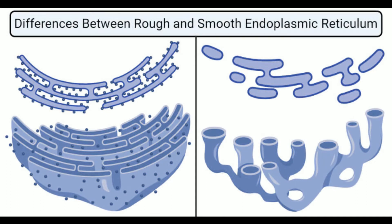The tubular structure of smooth ER is prominent in muscle and nerve cells in humans, forming networks with other cells. In muscle cells, the sarcoplasmic reticulum is formed of smooth ER, which is important in the accumulation of calcium ions. Smooth ER also has a dynamic structure that gives off new tubules from the sides, and these tubules also bind with the cytoskeletal framework of the cell. The number of smooth ER in a cell depends on the type, location, and function of the cell.